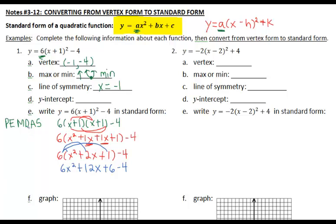Last step, we don't have any dividing, adding or subtracting. The only two like terms we have are the plus six and the minus four. So we've got 6x² + 12x, six minus four is going to be two. So that's your final answer, y = 6x² + 12x + 2.